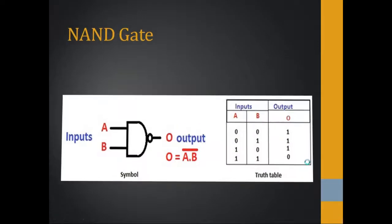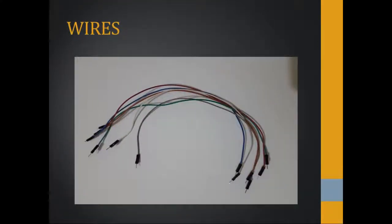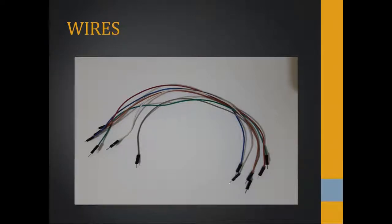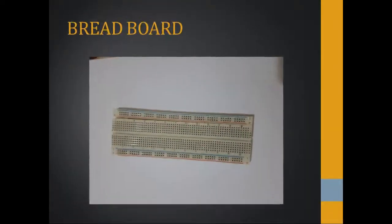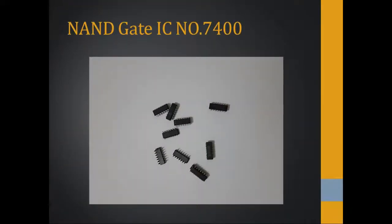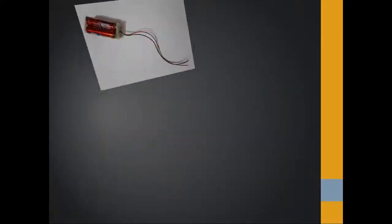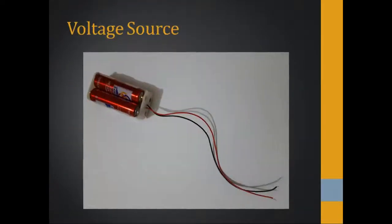The instruments and equipment required for this experiment are: wires, a breadboard, a NAND gate IC — the number of that IC is 7400 — LEDs, and a voltage source.